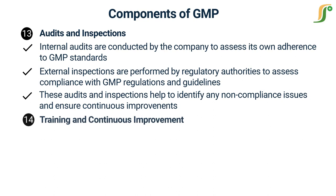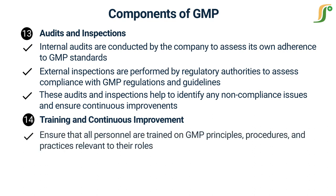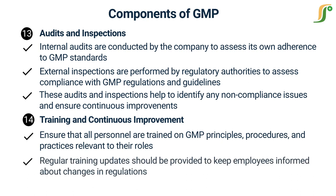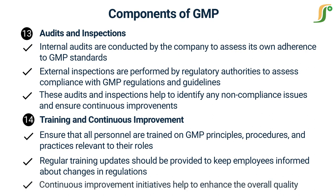The fourteenth and last component is Training and Continuous Improvement. Training and continuous improvement are ongoing components of GMP. Adequate training programs should be in place to ensure that all personnel are trained on GMP principles, procedures, and practices relevant to their roles. Regular training updates should be provided to keep employees informed about changes in regulations and industry best practices. Continuous improvement initiatives such as conducting quality risk assessments, implementing preventive actions, and monitoring key performance indicators help to enhance the overall quality and compliance of the manufacturing processes.